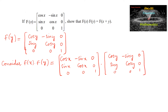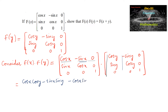So let's multiply — multiplication is row times column. First row with first column gives cos x times cos x minus sin x times sin x, and 0 times 0 is 0. Next, first row with second column gives cos x times negative sin y, minus sin x times cos y, and 0 times 0 is 0.